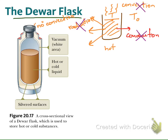Next, in the flask they have a double wall. This is the glass with a double wall — the thin white area between the walls. Inside that space is a vacuum. If there is a vacuum, it means there is no medium there, so there is no conduction.